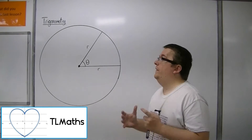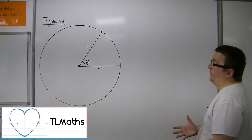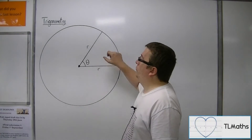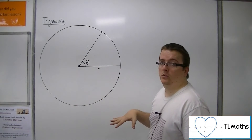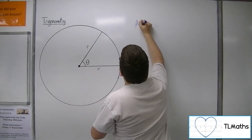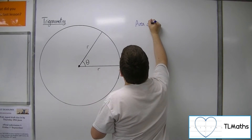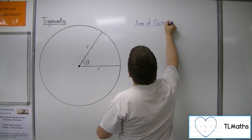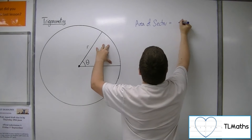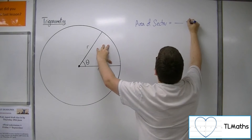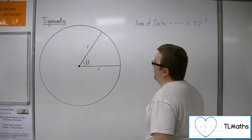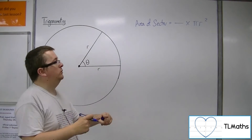We know that the area of a sector is a portion of the total area of the circle, π r squared. So the area of a sector — this slice of the pizza — will be some fraction of π r squared, the overall area of the circle.